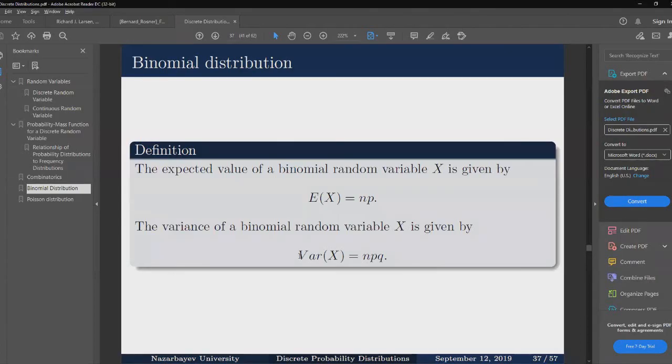In this video, we are going to conclude our chapter on discrete random variables and discrete distributions. A couple of things I forgot to mention about binomial distribution is that the expected value is given as n multiplied by p, where p is the probability of success, and the variance is given as npq, where q is the probability of failure and equals 1 minus p.